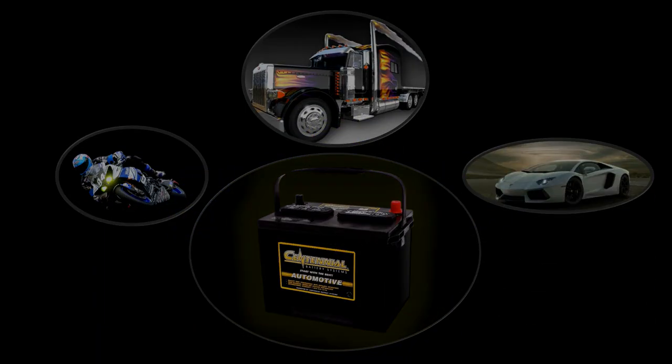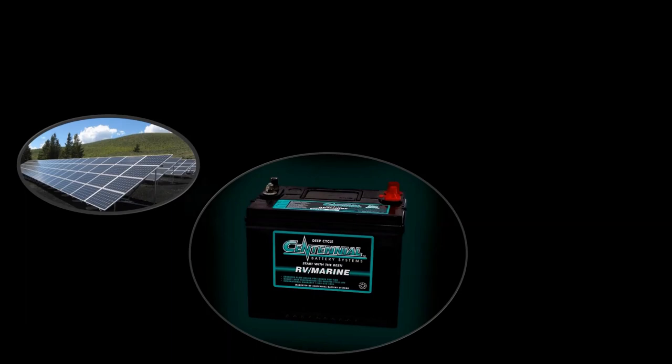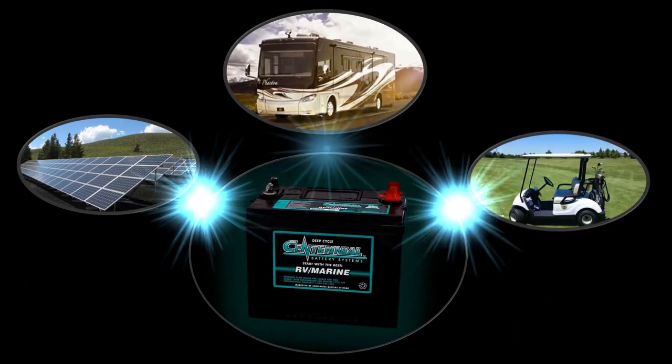Starting batteries are designed to deliver that energy in quick, powerful bursts. Deep cycle batteries are designed to deliver that energy steadily over an extended period of time.